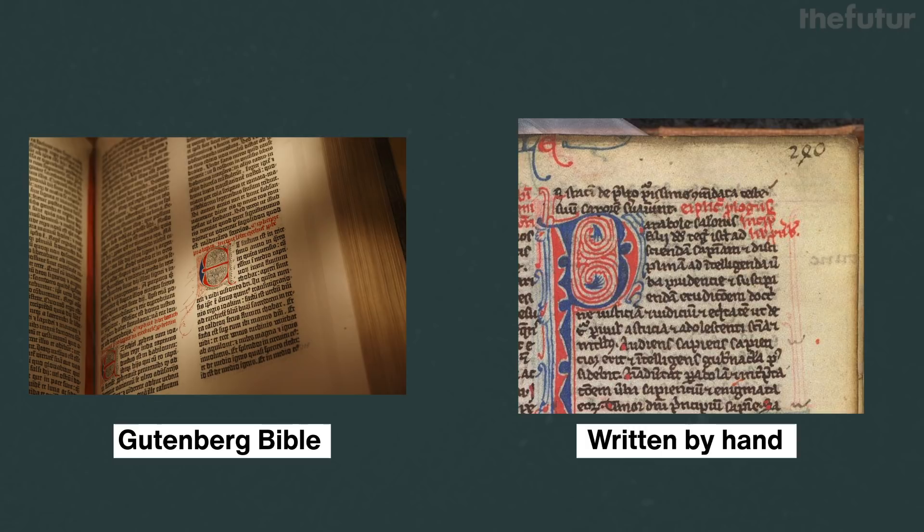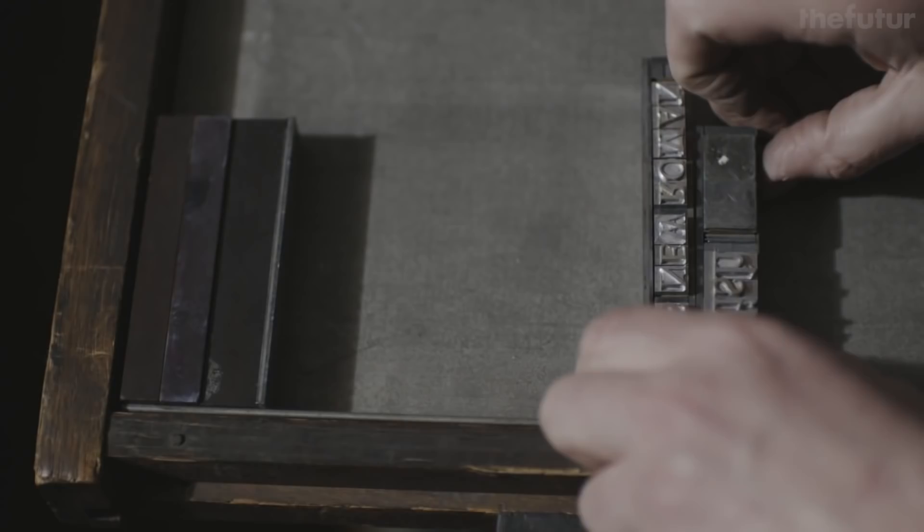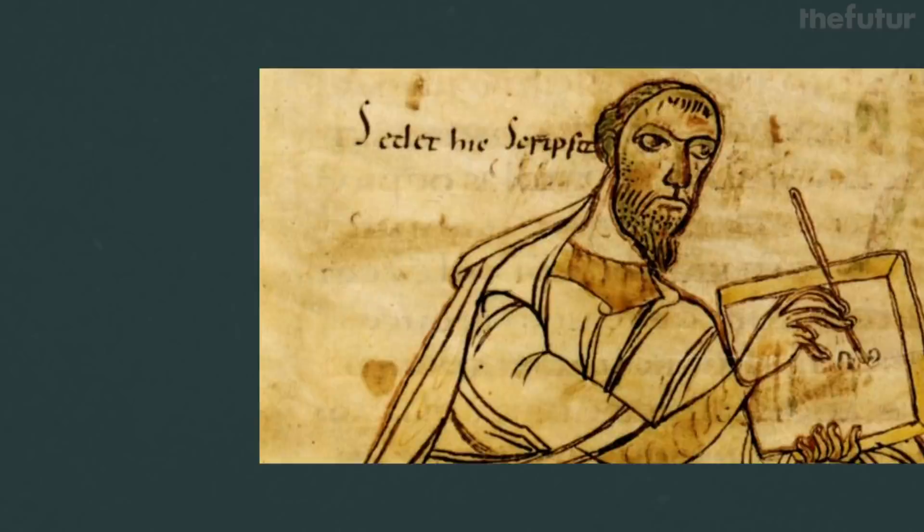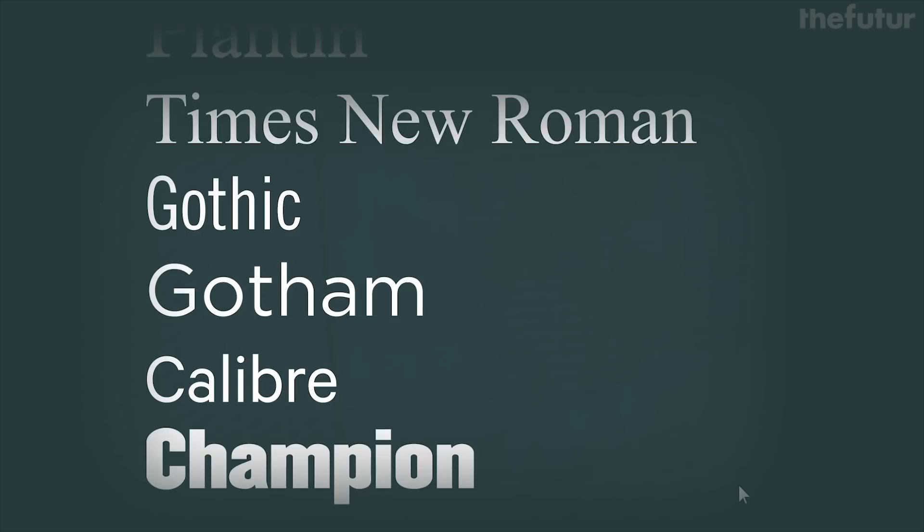When the printing press came out, it involved physically cutting each letter to be set into a block to show each word, line, and page, allowing it to be duplicated the same way every time. Before, scribes would have to rewrite text by hand — a long and expensive process. Today, typefaces and unlimited fonts are just a click away.